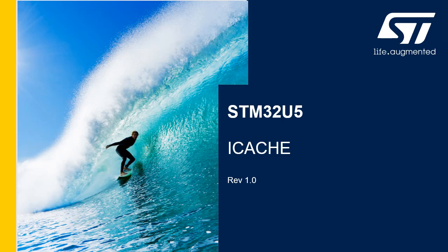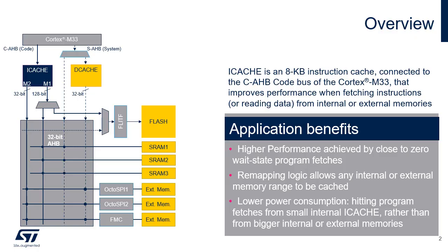Hello and welcome to this presentation of the iCache module, which is embedded in all products of the STM32U5 microcontroller family. The instruction cache or iCache is introduced on the CAHB code bus of the Cortex-M33 processor to improve performance when fetching instructions and data from internal flash or SRAM memories, or from external memories through the Octo SPI-1 and 2 or FMC interfaces. iCache allows close to zero wait state performance on program fetches in most use cases due to intrinsic caching operation.